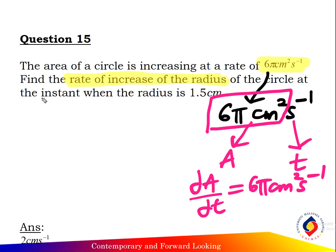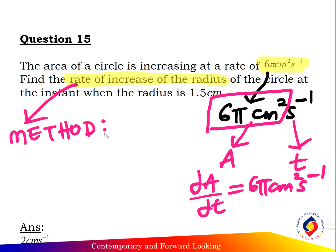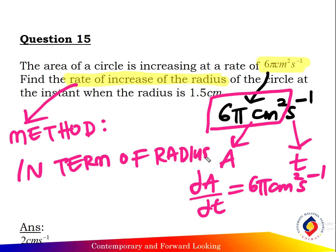Write down dA over dt equals 65 centimeters square per second. Second, find the rate of increase of the radius of the circle. So the method here: write down the parametric equation in terms of the radius.